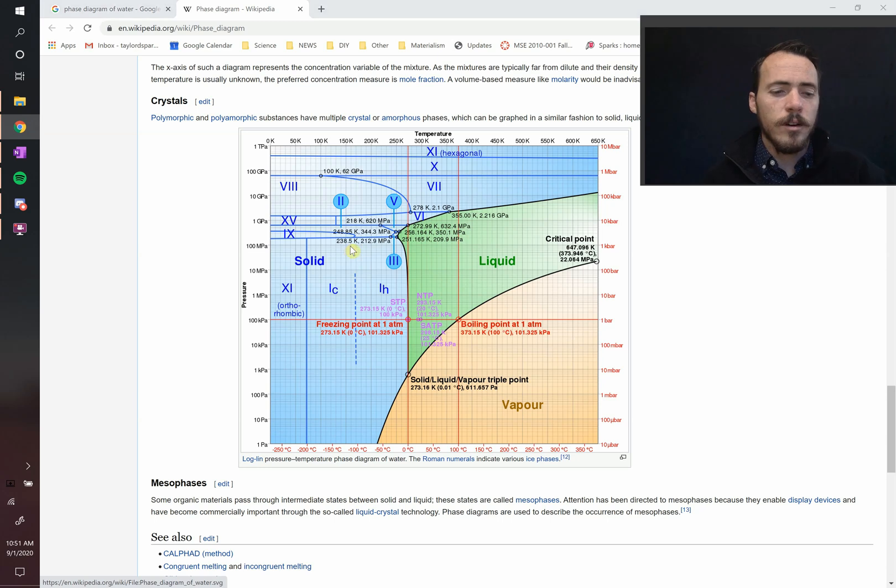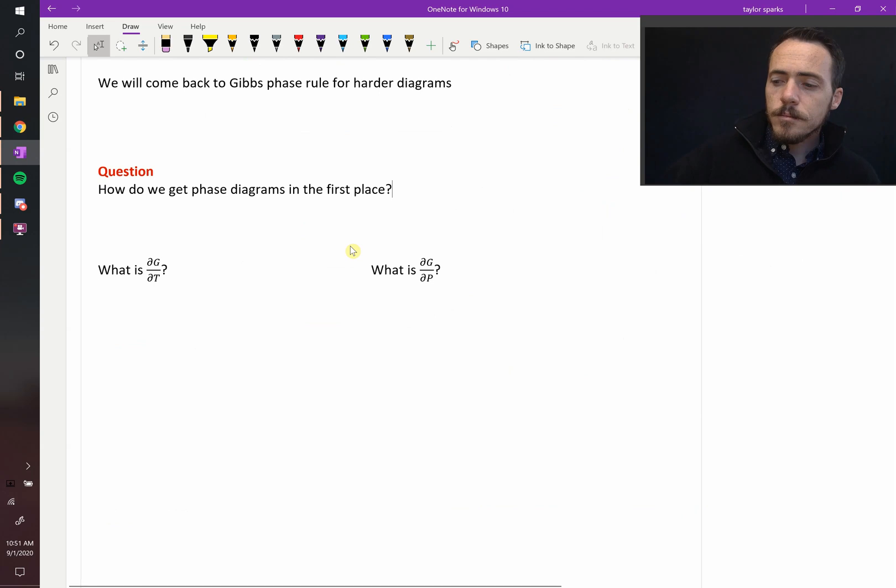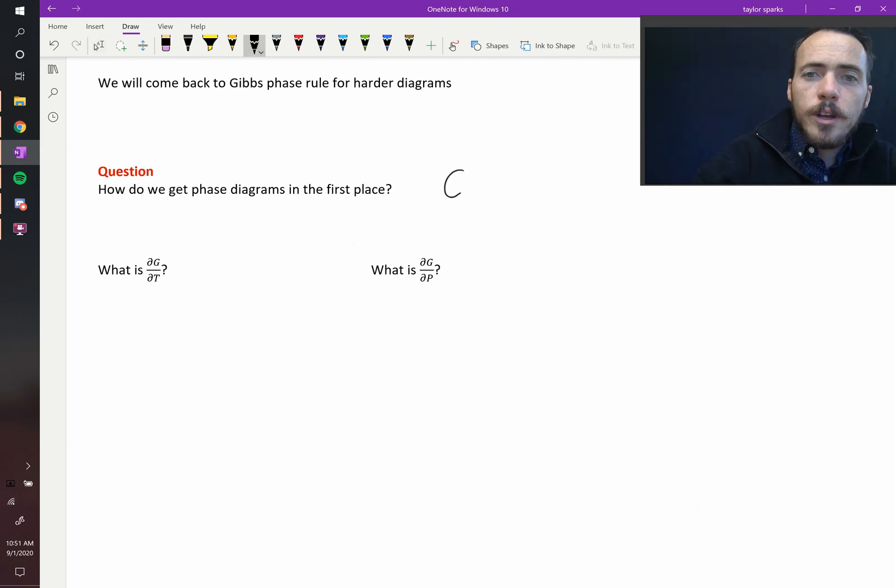So how would you calculate a phase diagram? Well, it has to do with free energy. We know, since these represent phases at equilibrium, we're going to use Gibbs free energy, because it tells us what phases will be in equilibrium by minimizing the Gibbs free energy.